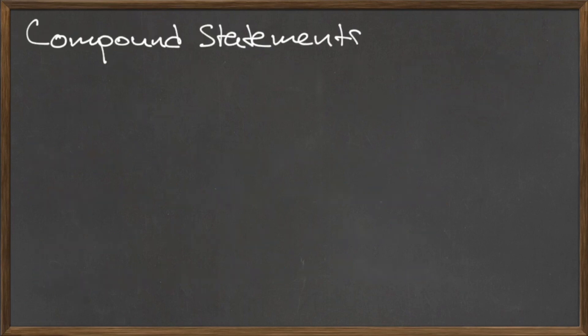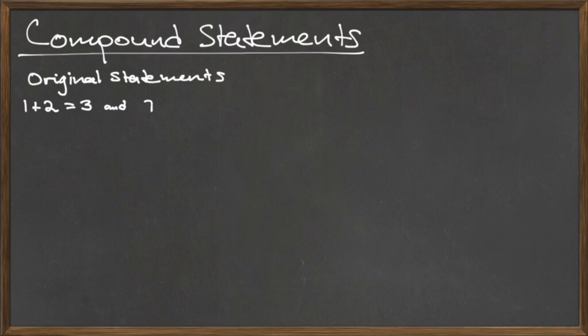Now let's talk about compound statements. Remember that a statement is a declarative sentence that can be evaluated as either true or false. What if we have more than one statement that say the same thing? For example, 1 plus 2 is equal to 3, but 3 is also equal to 7 minus 4. Rather than write these two statements individually, we can combine them into one compound statement: 1 plus 2 equals 3 equals 7 minus 4.